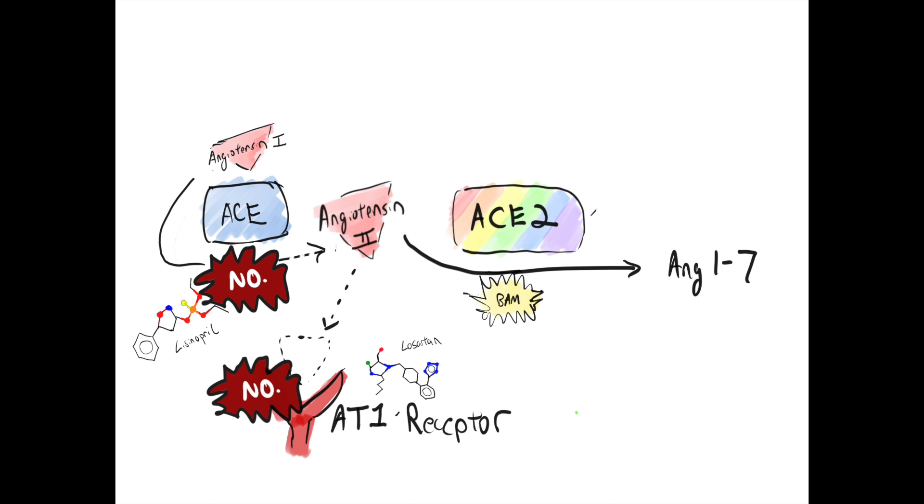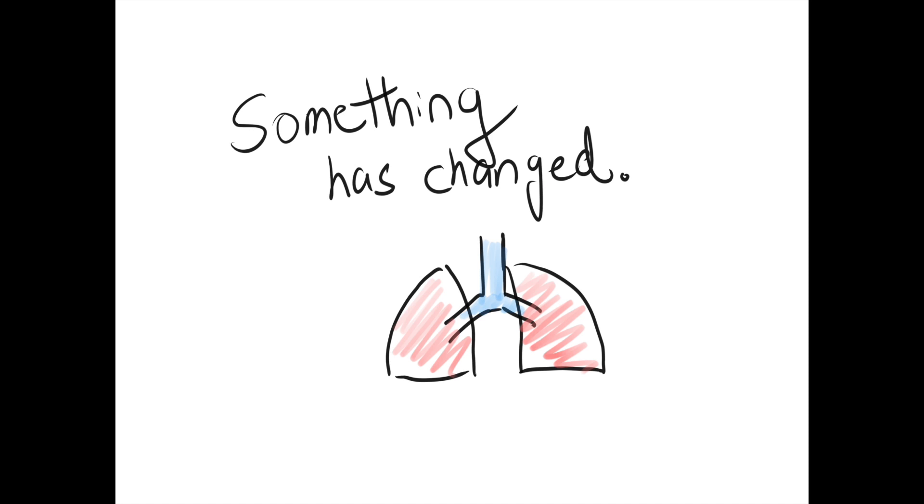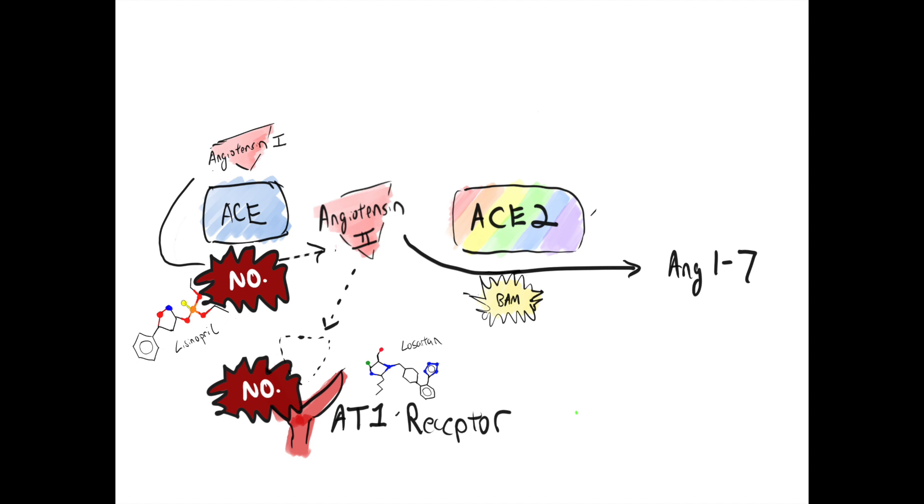So after a while, how does the body then respond to this blockade? Much like alcoholics upregulate GABA expression because their existing receptors are saturated, people on ACE inhibitors and ARBs likely have upregulation of both ACE and ACE2. They make more of it in response. This has also been previously demonstrated in rat models, and there's also possibly decreased degradation of existing ACE2. Long story short, the net effect here is that people who are already on an ACE inhibitor and ARB likely have relatively higher expression of ACE2.